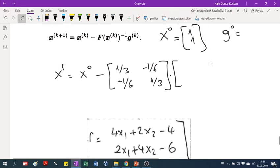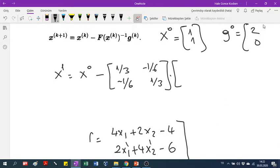So our g(0) will be 4 times... all the x and y values, x1 and x2 values are 1. So it will be 4 plus 2 minus 4, which is 2 for the first component. And I'm substituting (1,1) here, so it becomes 0. So your gradient is [2, 0].